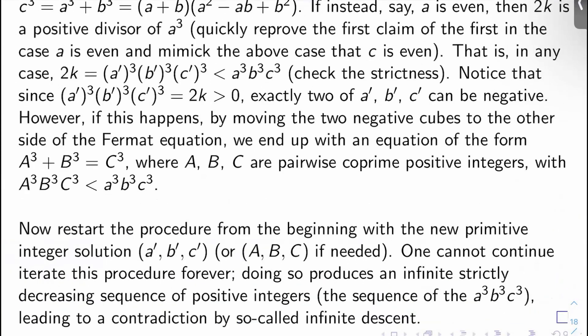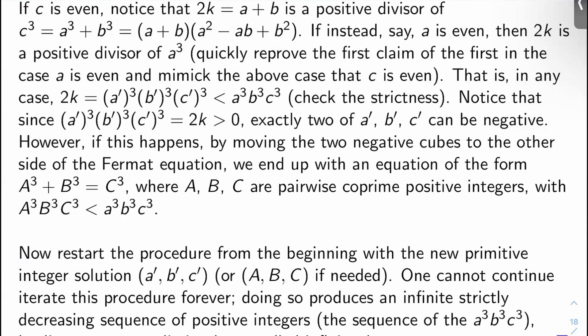Next video, I will fill in Euler's gap, and I will also give you the references I promised. A good place to read about the details I skipped and more about Fermat's Last Theorem for specific exponents would be Edwards' book, Fermat's Last Theorem: A Genetic Introduction to Algebraic Number Theory, specifically the first few chapters. I'll see you next time to fill in Euler's gap. Thanks for watching.